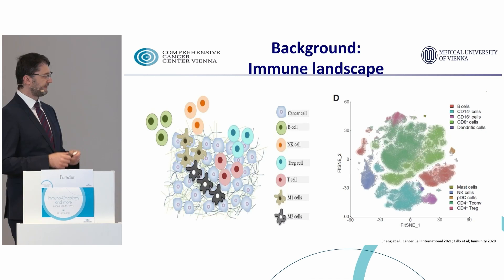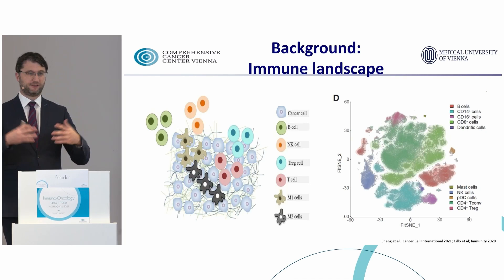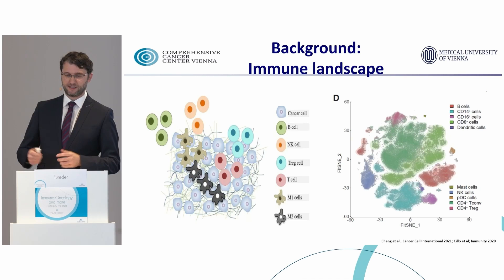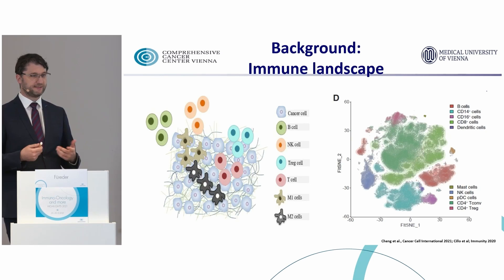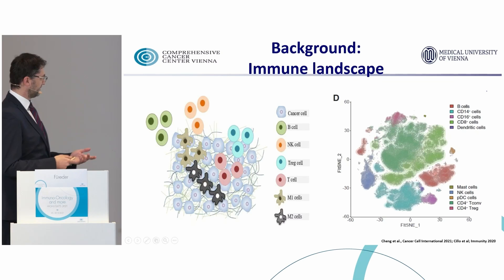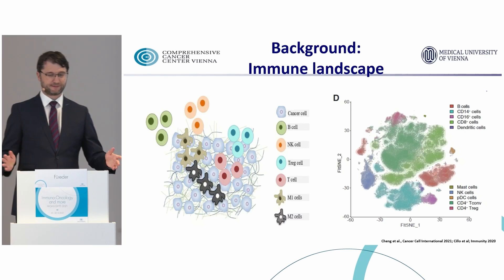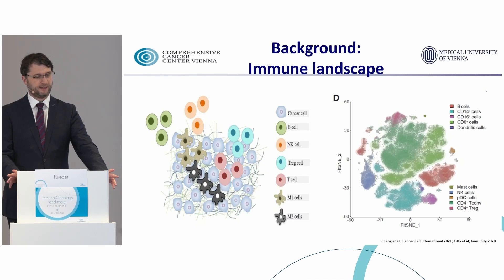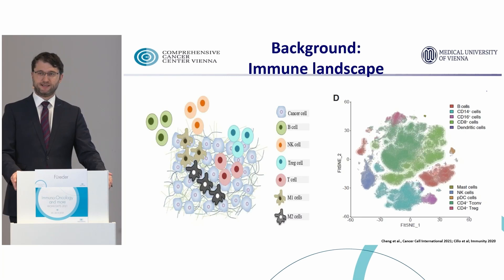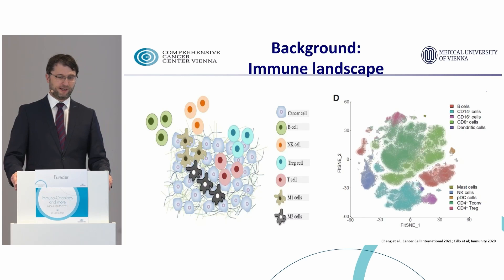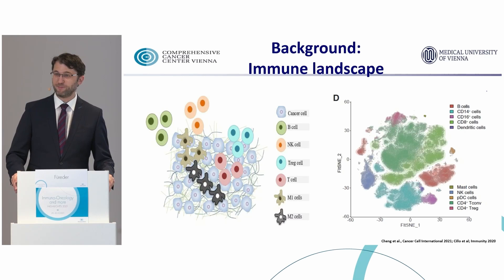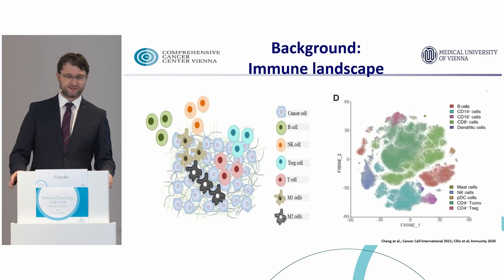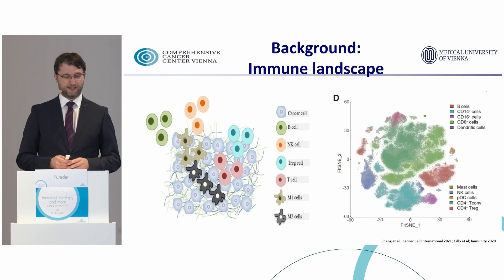As you can see on the left-hand side of this slide, a tumor is infiltrated with multiple immune cells. Some of those cells belong to the adaptive immune system — think of effector T cells or regulatory T cells. On the other hand, some are part of the innate immune response, such as macrophages or NK cells. On the right-hand side are single-cell sequencing data from head and neck cancer, where they counted about 140,000 immune cells.